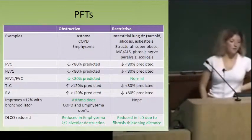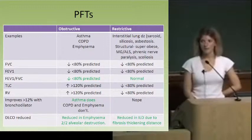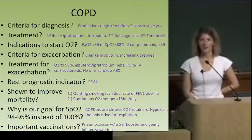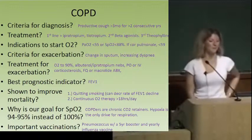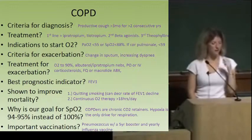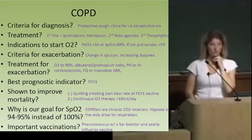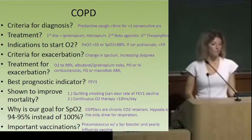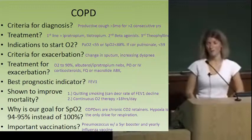Know your COPD. Diagnosis of an acute exacerbation: productive cough for longer than three months over two consecutive years is COPD. How do we treat COPD? First line is ipratropium or tiotropium. Beta agonist is second line. Third line, if they're really bad, theophylline — but we don't like it because of its narrow therapeutic window and risk of arrhythmias.